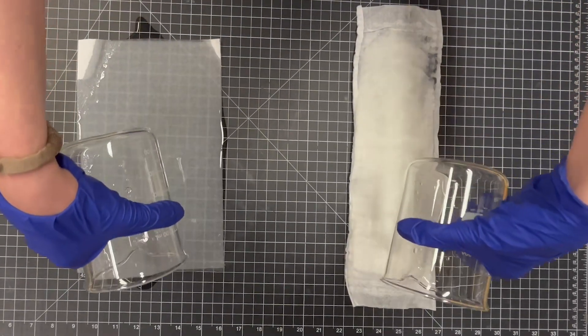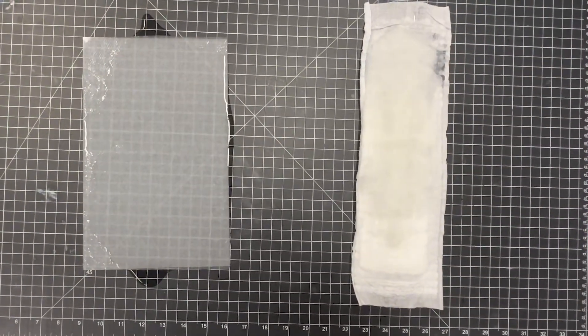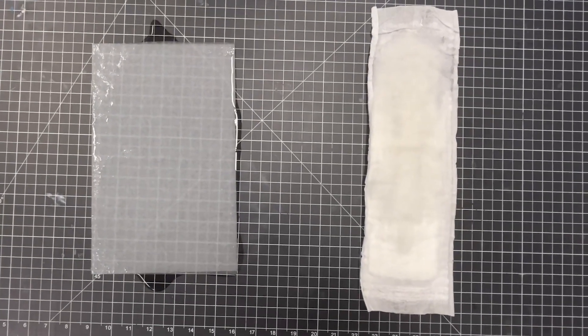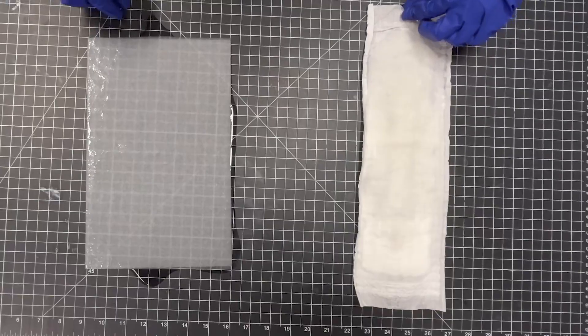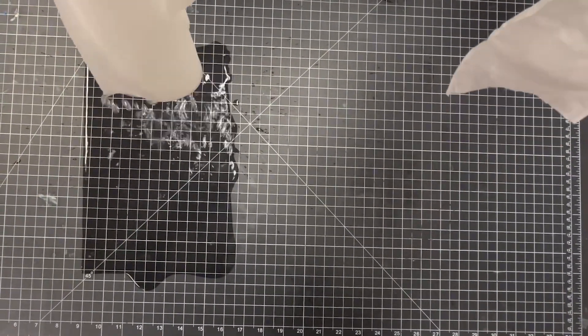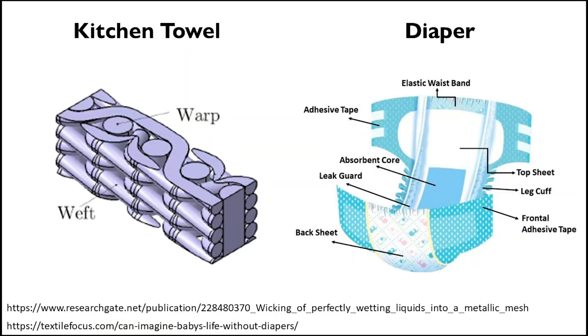Though both are used for wicking liquid, kitchen towels are used primarily for small spills and do not need to store the liquid for long. Diapers, on the other hand, are expected to absorb and store liquid until it is replaced, which may be a long time. Different requirements allow for different cost-effective formulations.